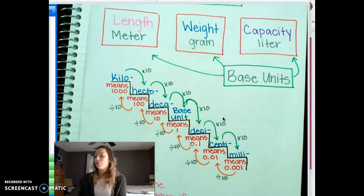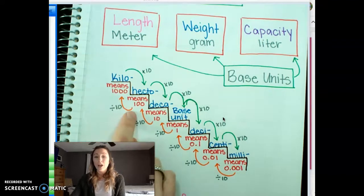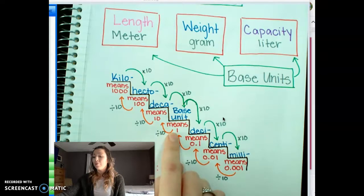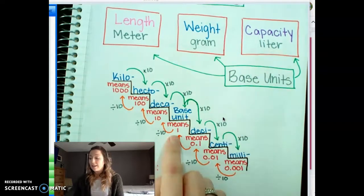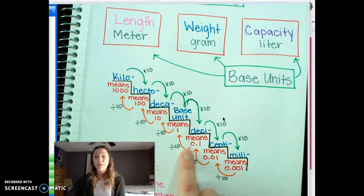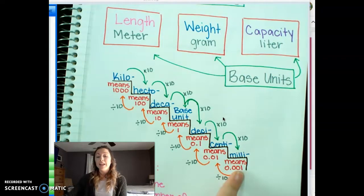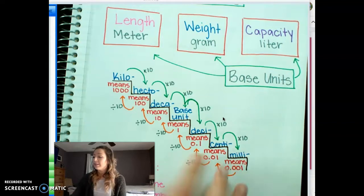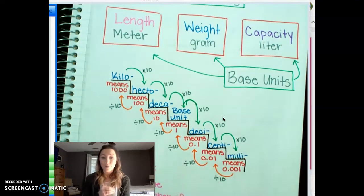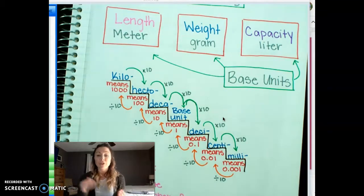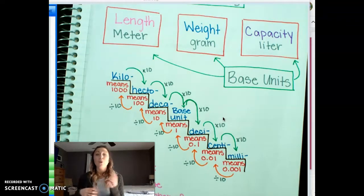Each prefix has a different meaning: kilo means a thousand, hecto means a hundred, deca means ten, the base unit is one, deci means one tenth, centi means one hundredth, and milli means one thousandth. So deci through milli are going to be less than a whole. I just wanted to remind you about that before we start converting measurements in weight and capacity.